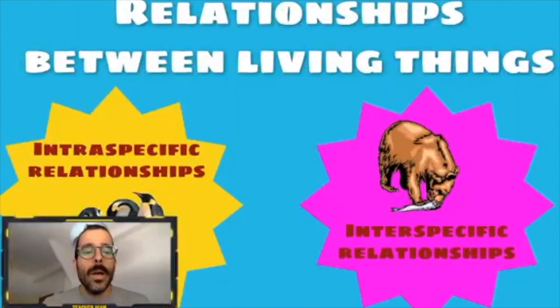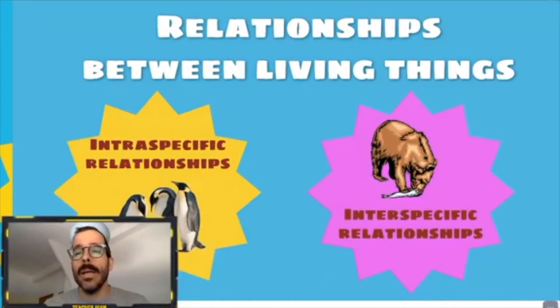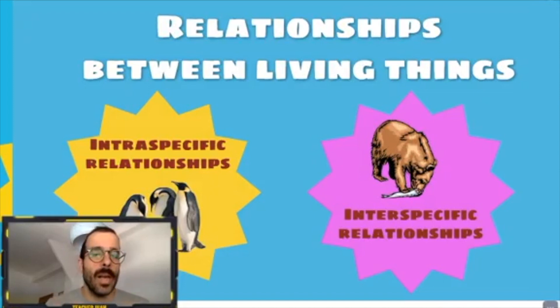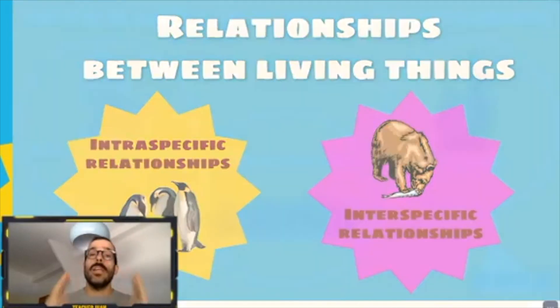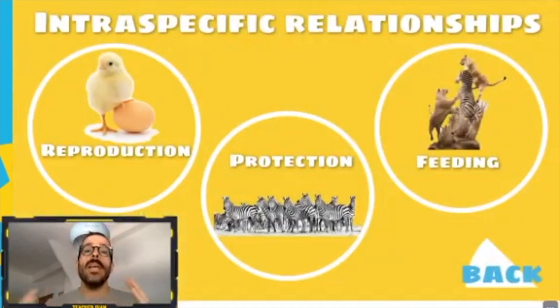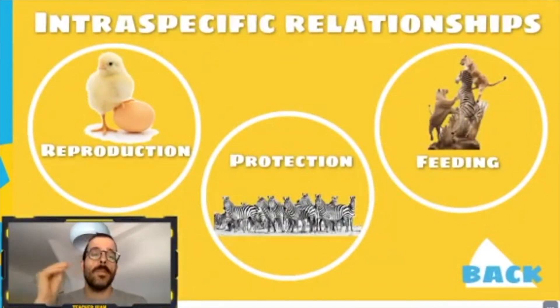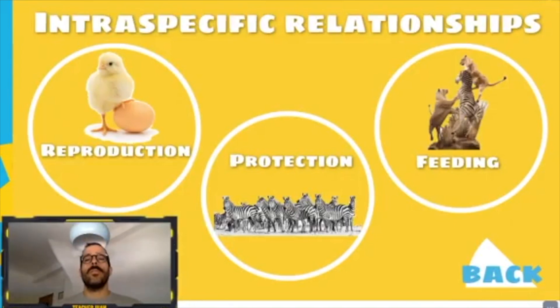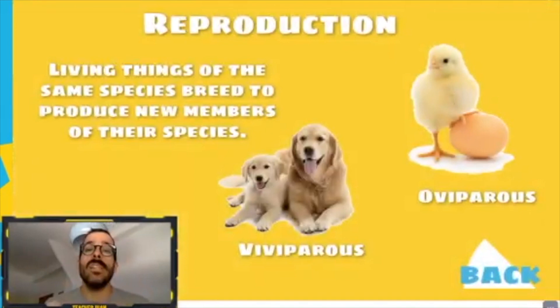We are going to start with intraspecific relationships. Intraspecific relationships are relationships within the same species. The first of these is reproduction — living things of the same species breed to produce new members of their species.